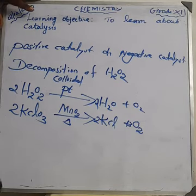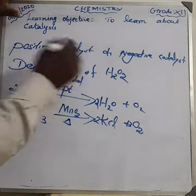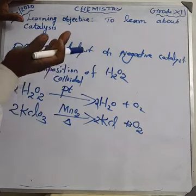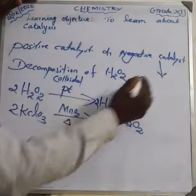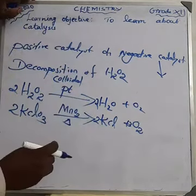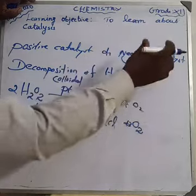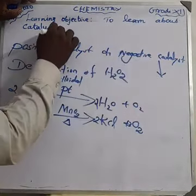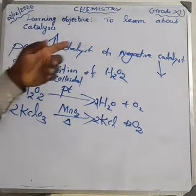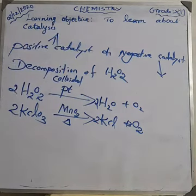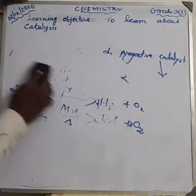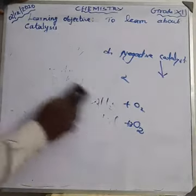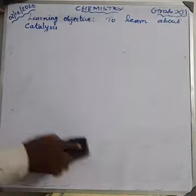About the negative catalyst: the rate of the reaction decreases in the presence of the added substance. When we add one substance and the rate of the reaction decreases, that is a negative catalyst. Increasing rate means positive; decreasing rate means negative.